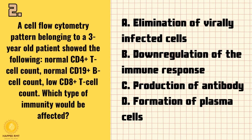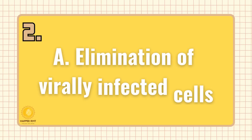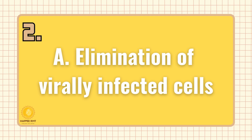Number 2. A cell flow cytometry pattern belonging to a 3-year-old patient showed the following: normal CD4 T cell count, normal CD19 B cell count, and low CD8 T cell count. Which type of immunity would be affected? A. Elimination of virally infected cells. B. Downregulation of the immune response. C. Production of antibody. D. Formation of plasma cells. Answer is A: Elimination of virally infected cells.